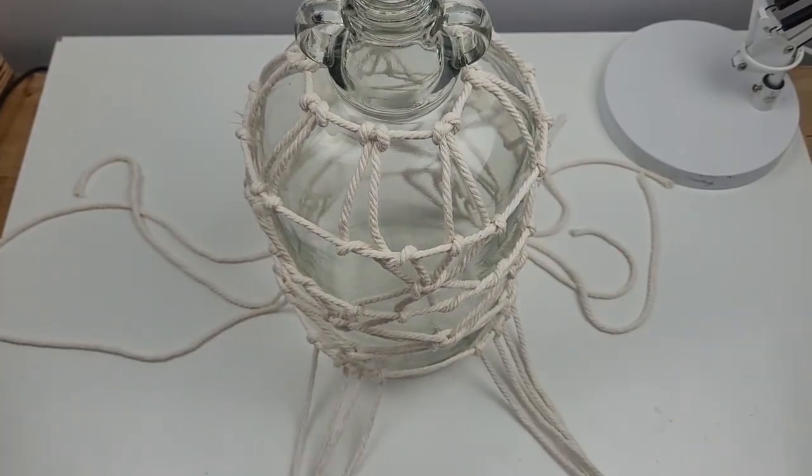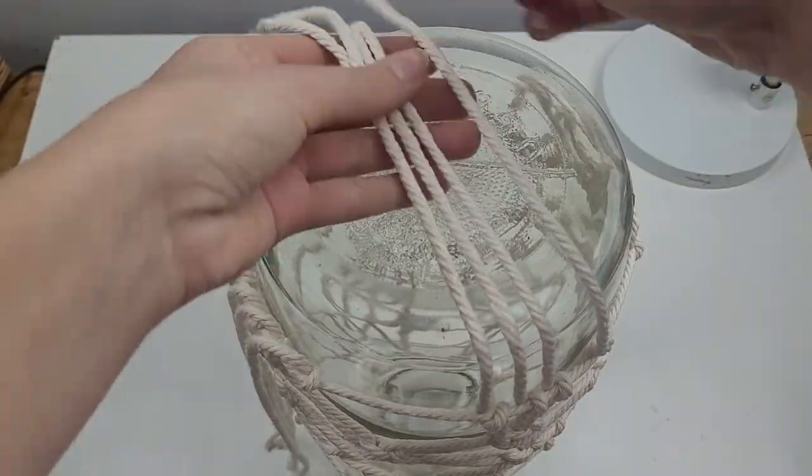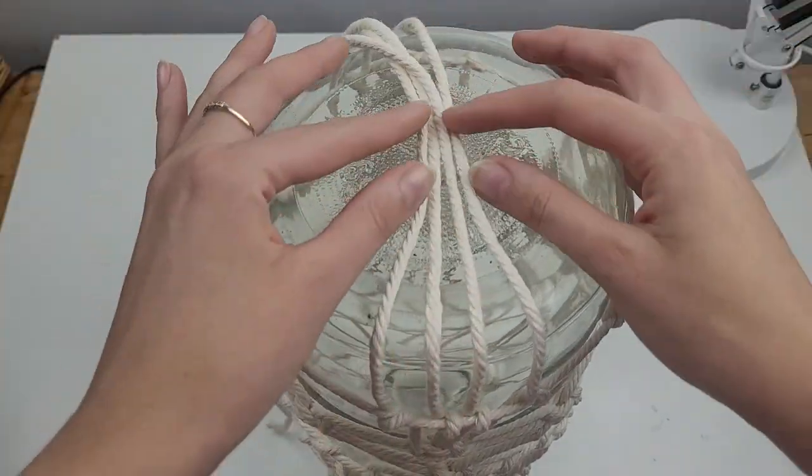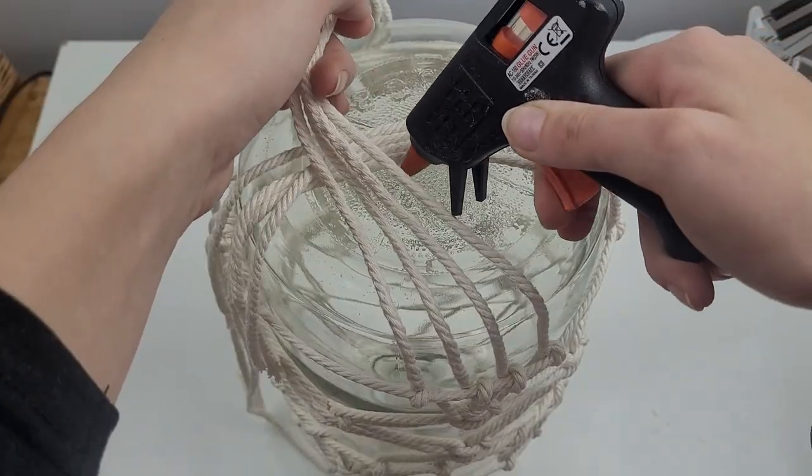For the bottom I've added another horizontal cord and wrap all the loose cords around it. To finish it off I turn my jar upside down and glue all the ropes to its bottom.